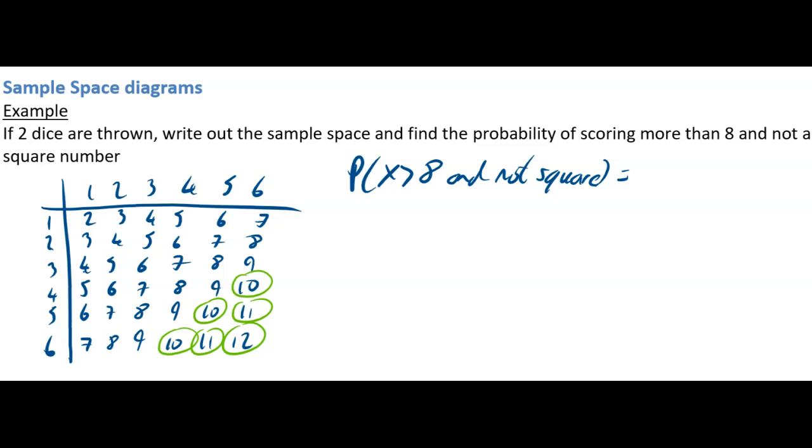So when we actually look at it, we've only got 1, 2, 3, 4, 5, 6. It's 6 out of 36 of our possible outcomes, which is just 1 out of 6, and that's it.